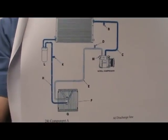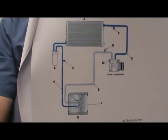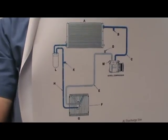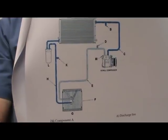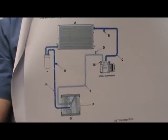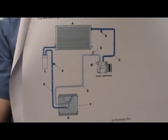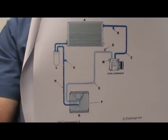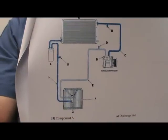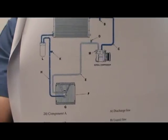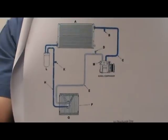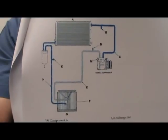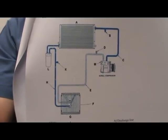Do we have a suction line coming from the evaporator to the compressor? The suction line is the big cold one that comes from the evaporator down to the compressor. If the system is fully charged and working right, that line will be cold all the way to the compressor.